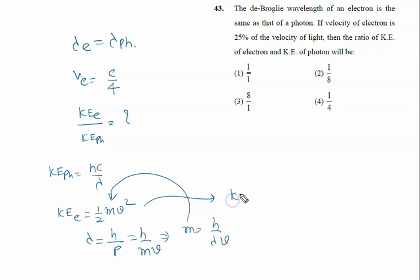What we are getting? We are getting kinetic energy of electron is half m, and m is h upon lambda v into v square. So finally it is h upon 2 lambda into v.